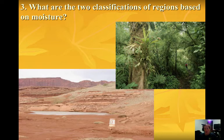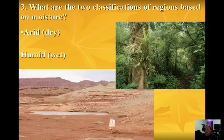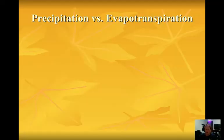To classify regions based on moisture, we say that the area is either arid, which means dry, or humid, which means wet. You can see different landscapes develop based on the type of moisture in an area. To describe the moisture level of an area, we compare the precipitation level to the evapotranspiration level.